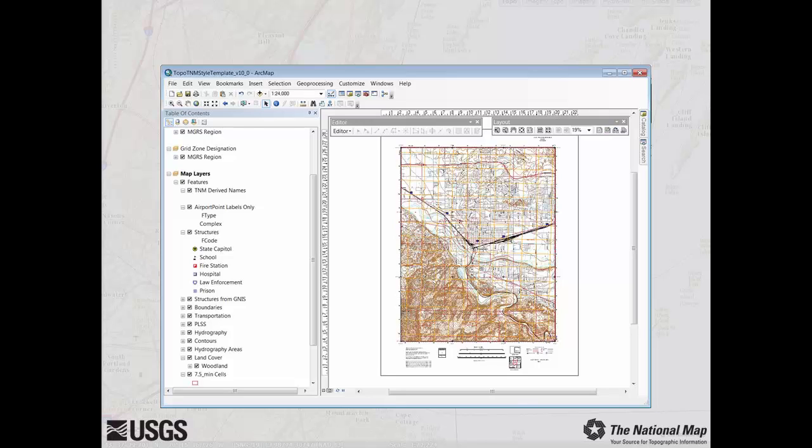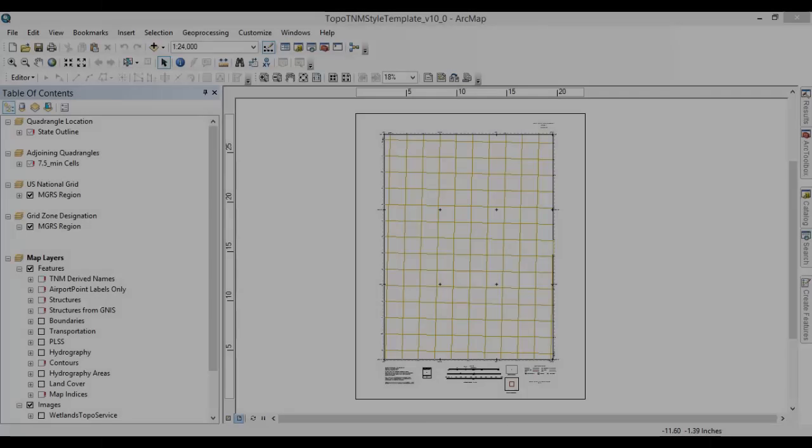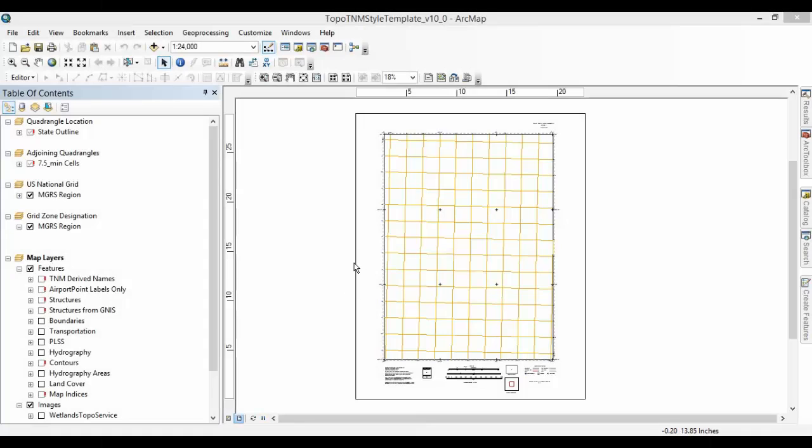Let's discuss and download the style template and topo map vector data products. Before we get started, please note that this video will not discuss the red exclamation points you see next to the boxes of the data layers in the style template. Resolving these data sources will be explained in a subsequent video on how to configure the style template.